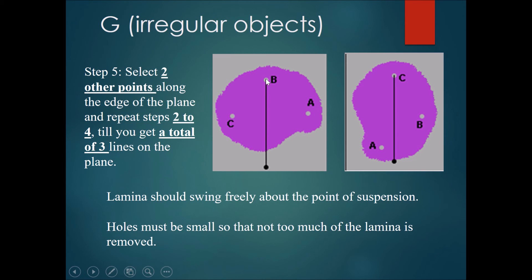At first, we attach the object by B, let it swing freely and then we attach a plumb line, let it swing freely, let both of them stop and then you draw another line down the plumb line. Do it once again with C, let it swing again, let it stop, attach the plumb line to C, let it stop and then draw a line through again until you get a total of three lines on the plane.